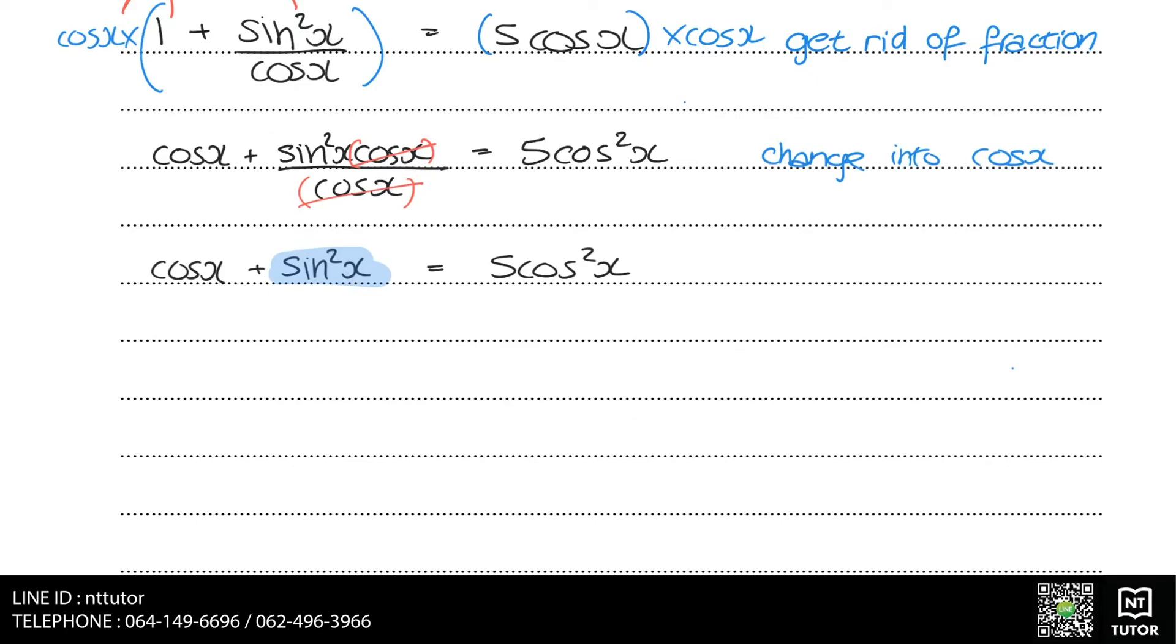From the formula sheet, we have the identity cos²θ + sin²θ = 1. We can rearrange this for sin²θ, where sin²θ = 1 - cos²θ. This means that we can replace sin²x in our expression with 1 - cos²x.